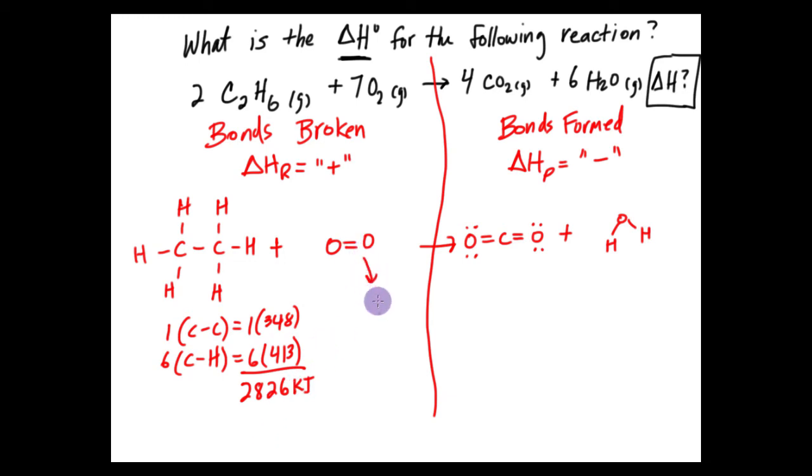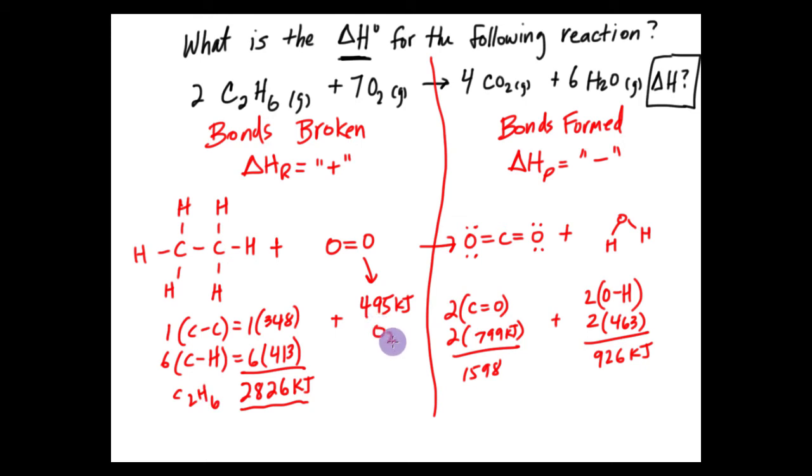Okay? Now the oxygen, if you look it up on the chart, there's only one of them, and the double bonded oxygen has an energy of 495 kilojoules. Okay? So I've recalculated all the energy. So this is the energy for ethane. This would be my C2H6. This would be O2 here. This would be the carbon dioxide, and this would be the water. Okay? So those are the energies associated with each of those molecules.